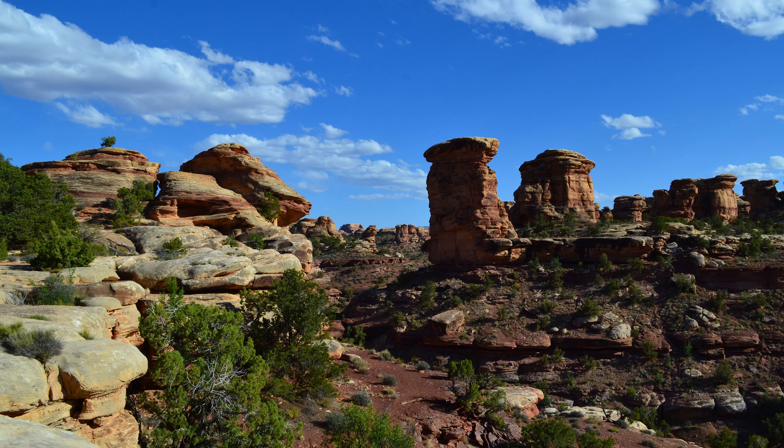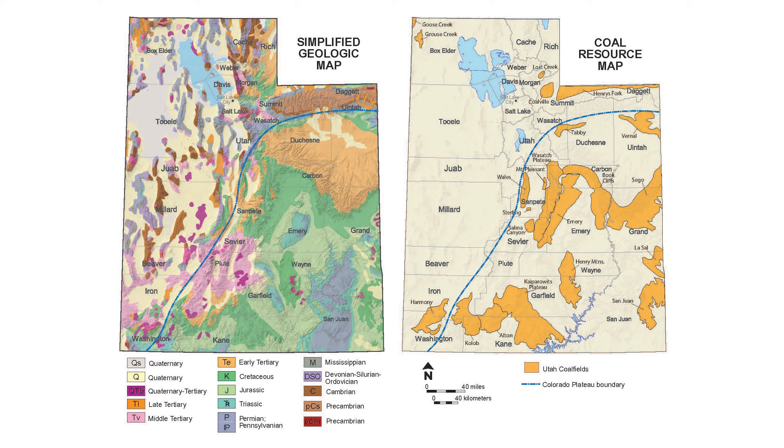Throughout the early 20th century, southeast Utah and its unique geological features attracted many visitors, some of whom were interested in mapping and preserving these features, and some of whom were interested in the resources the area had to offer. While cattle ranching and agricultural activity would not have been viable on a grand scale due to the dry climate, southeastern Utah was rich in precious resources such as oil, potash, uranium, and vanadium.